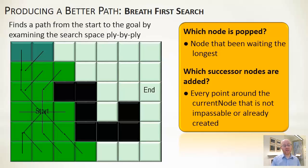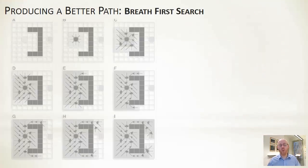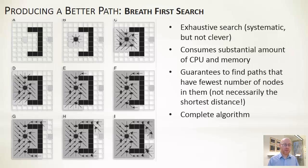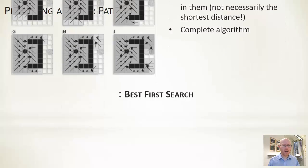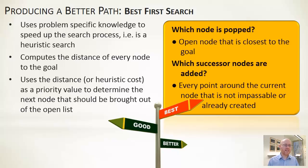The expansion swarms out systematically from the start position. Breadth-first is an exhaustive, systematic search — not clever. It generally consumes a lot of CPU and memory. However, it guarantees finding the path with the fewest number of nodes, though that's not necessarily the shortest distance. It is a complete algorithm — if a path exists, it will find it eventually.